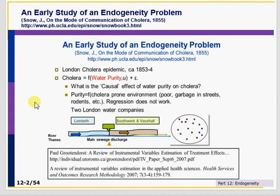In the mid-19th century, there was a prevalence of cholera — the story of the London cholera epidemic. Cholera is a function of water purity, but water purity itself is related to poor environment, garbage in streets, rodents, and many other things. It was assumed before Snow that it was miasma and human secretions that led to more cholera, not water purity.